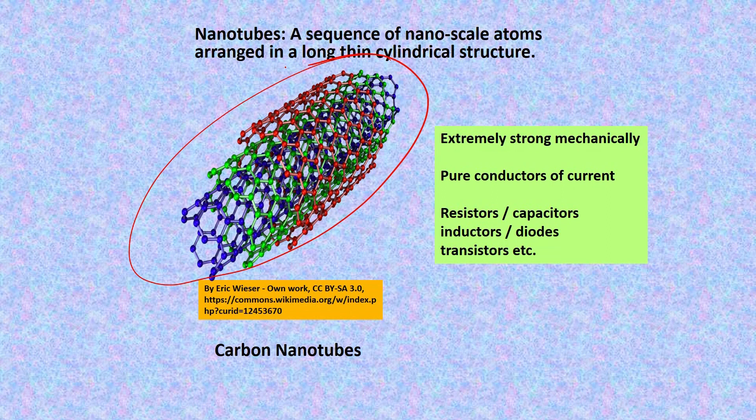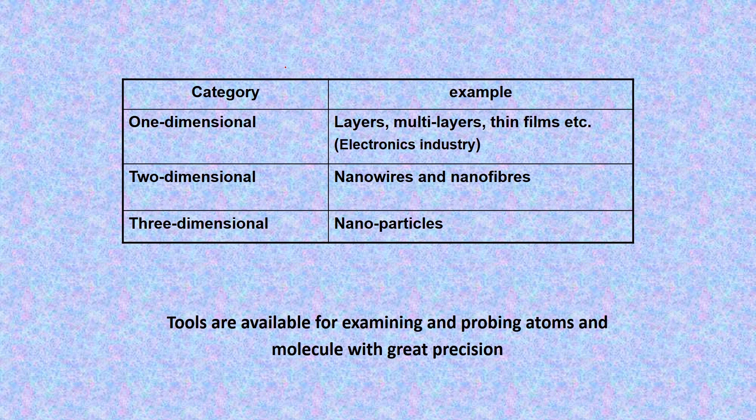We get nanomaterials in different forms. We have one-dimensional nanomaterials which are layers, multilayers and thin films — very much used in the electronics industry. We also have two-dimensional nanomaterials which are nanowires and nanofibers, and of course three-dimensional nanomaterials which are nanoparticles. In recent years, many tools have become available for examining properties at nanoscales by probing atoms and molecules with great precision, and because of that nanotechnology is being utilized in many situations in engineering.